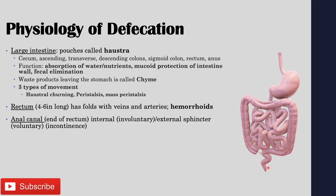Right after the rectum, we have the anal canal, which is about one to two inches long and contains sphincters. The internal sphincter is involuntarily controlled by the autonomic nervous system. The external sphincter is voluntarily controlled, which allows us to be able to defecate. Whenever those sphincters are no longer functioning or we're not able to control them, incontinence results — meaning we're not able to control our defecation.